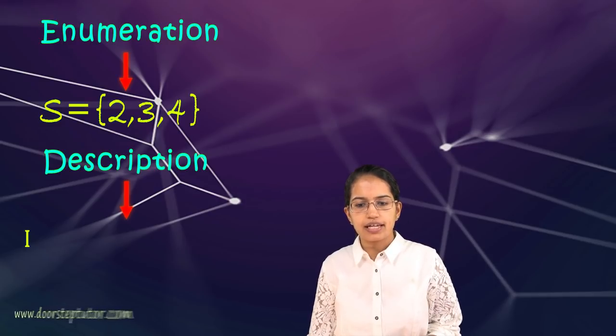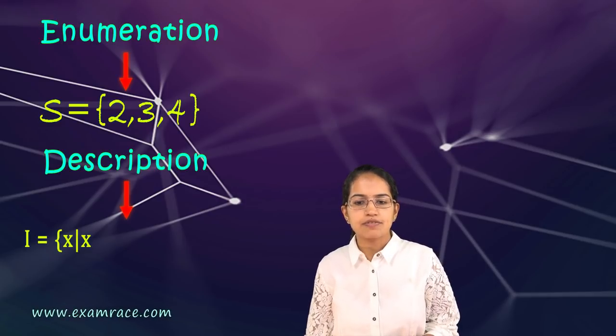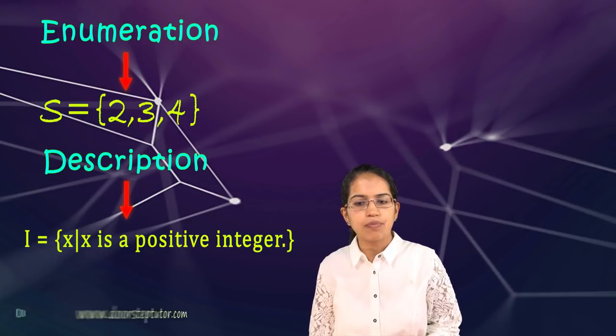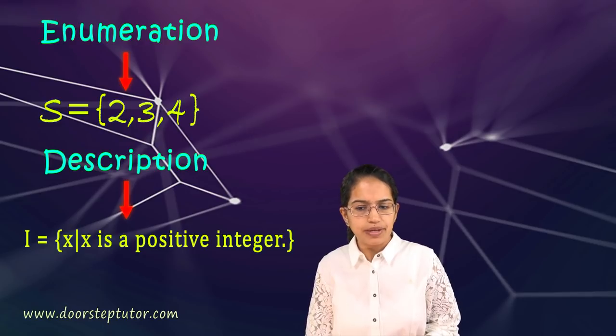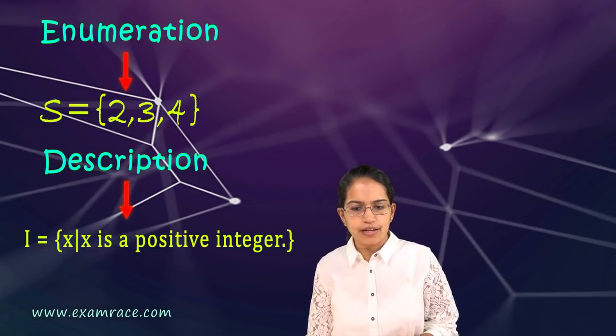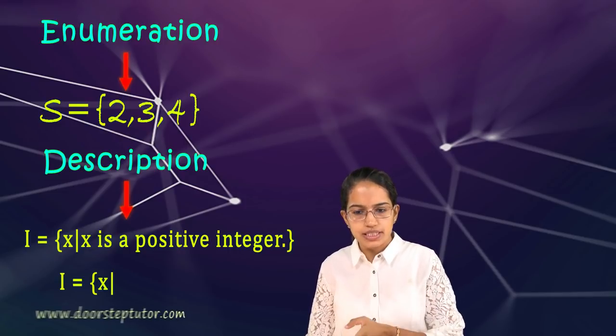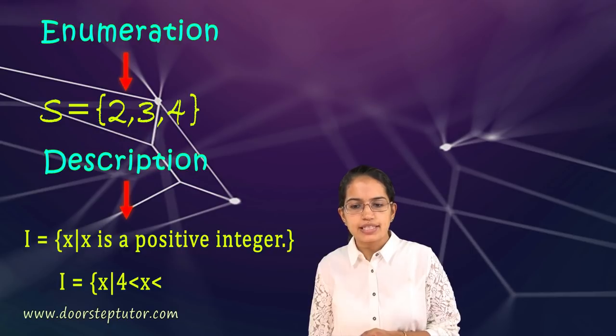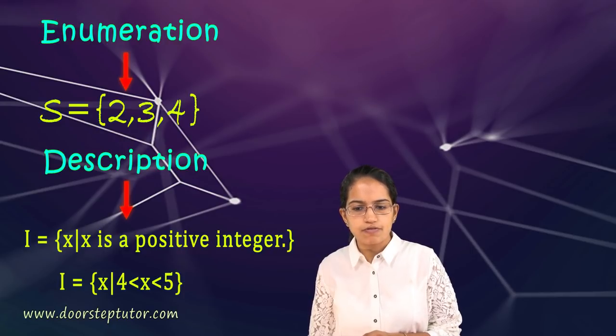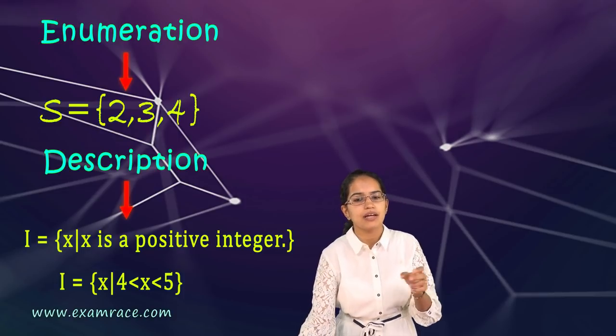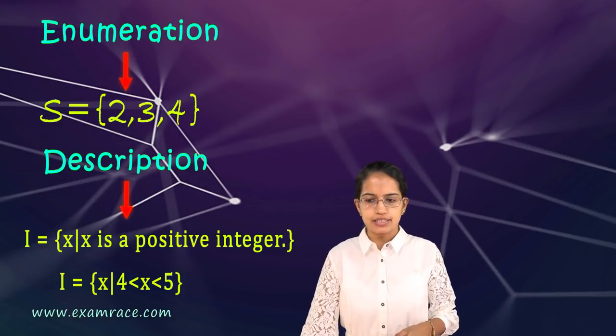The next thing is by description. When I say I has X where X is a positive integer, or I can put up another statement where I say I is a set of all numbers X where X is less than 5 and greater than 4. Any number ranging from 4 to 5 would be part of my integers here.